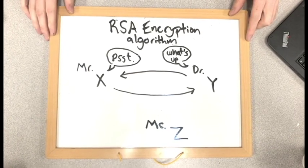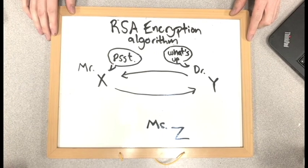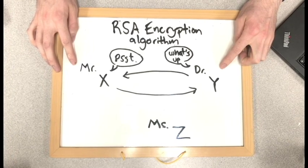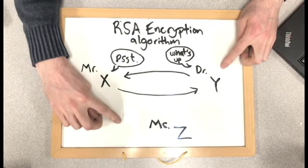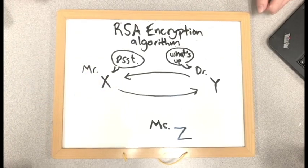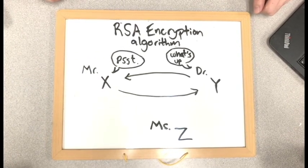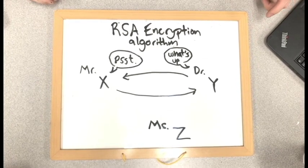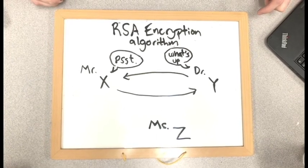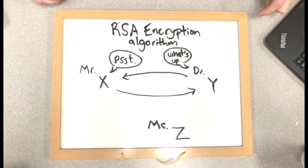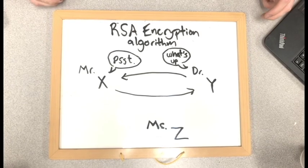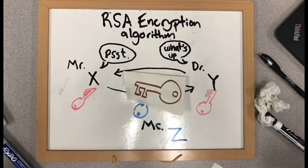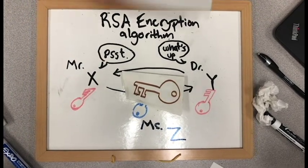To explain how this system works, we will use an example where two parties, Mr. X and Dr. Y, are trying to exchange a secret message, while another party, we'll call them Ms. Z, is trying to look in. We need to find a solution where Mr. X and Dr. Y are not required to interact directly before they can communicate securely. This can be done using an algorithm first published by Whitfield Diffie and Martin Hellman in 1976 called the Diffie-Hellman Key Exchange.